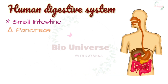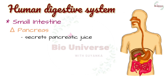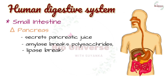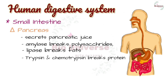The pancreas secretes pancreatic juice, which is carried by the pancreatic duct into the duodenum. Pancreatic juice contains a number of digestive enzymes such as amylase for the splitting of polysaccharides, lipase for the breakdown of fats, and trypsin and chymotrypsin for the breakdown of proteins.